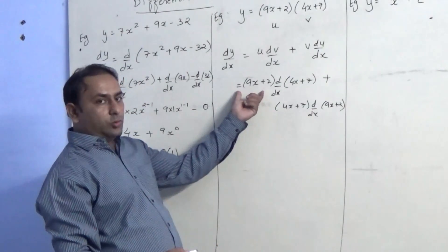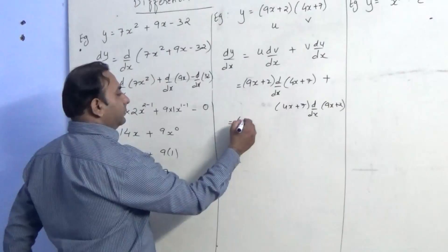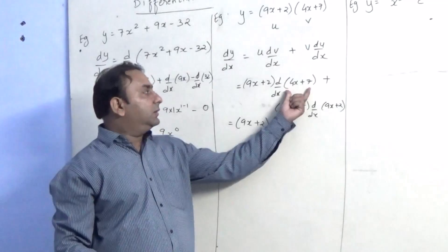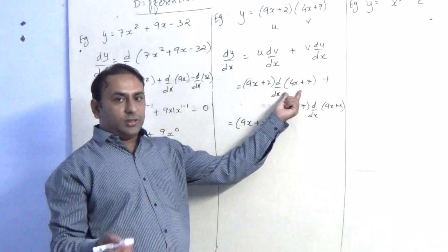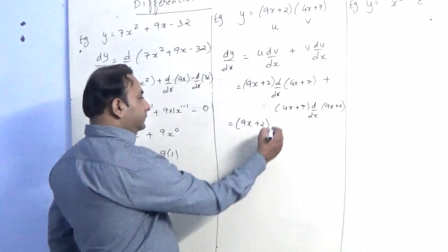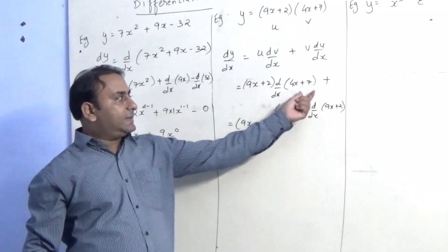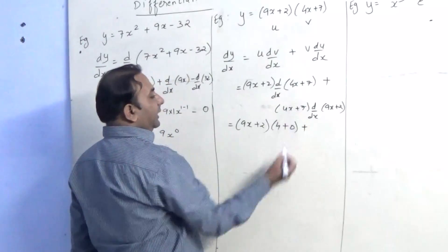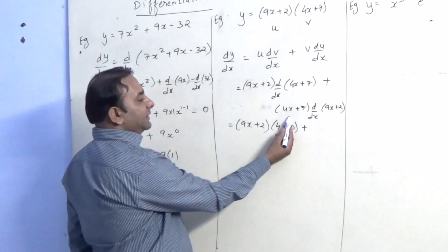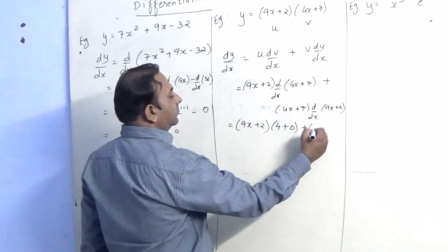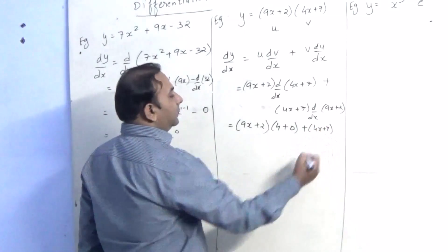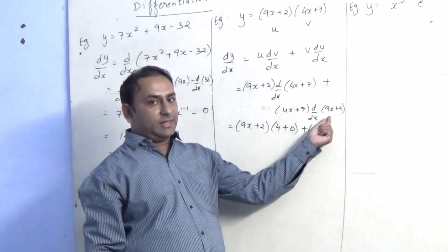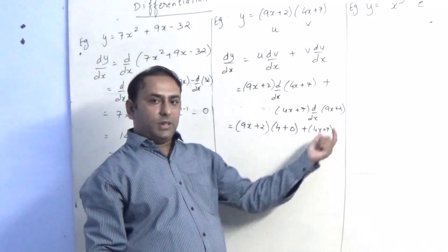The first bracket 9x plus 2 will remain the same. We will find the derivative of the second bracket 4x plus 7. The derivative of 4x is 4, and 7 is a constant so it becomes 0. Similarly, the bracket 4x plus 7 will remain the same. In the second part, we find the derivative of 9x plus 2: 9x gives 9, and 2 becomes 0.